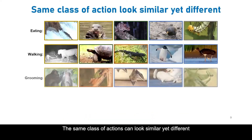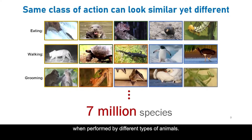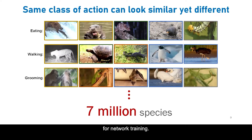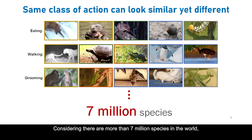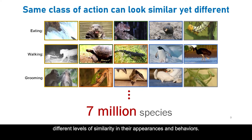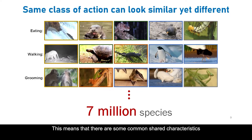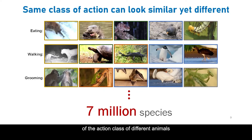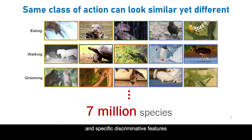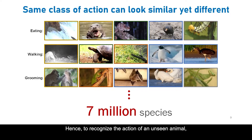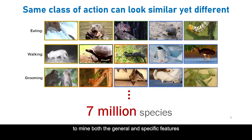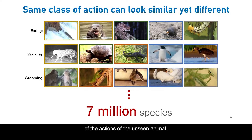The same class of actions can look similar yet different when performed by different types of animals. It can be difficult to collect and annotate many samples for various species for network training, considering there are more than 7 million species in the world, and different animals can share different levels of similarity in their appearances and behaviours. This means there are common shared characteristics of an action class across different animals, and also specific discriminative features which may be unique to certain animal types. Hence, to recognise the action of an unseen animal, we can leverage these different levels of similarity to mine both general and specific features of the actions.